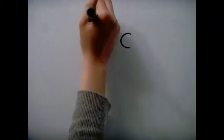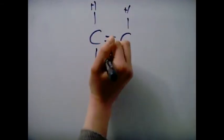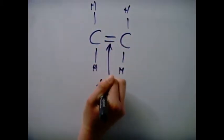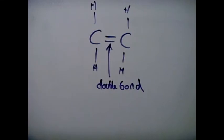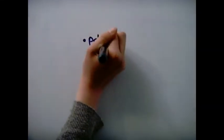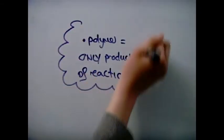The monomer has a carbon-carbon double bond. In addition polymerization, the carbon-carbon double bond splits to allow another monomer to join to form the polymer. The reason why it is called addition polymerization is because the polymer is the only product of the reaction.